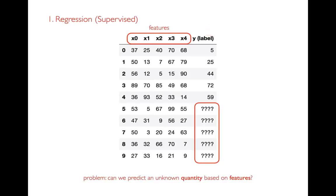This label we're trying to predict — we look for a relationship between it and the other columns, which we call features. We have some rows where we know both features and label, and other rows where we only have features and want to predict the Y label. Maybe some houses have already sold so we know the price, and others haven't gone on the market yet. The regression problem is: we want to predict the quantity — the Y column — based on the features. By quantity I mean this is a number.